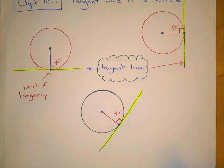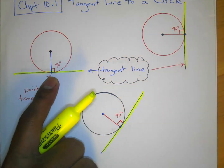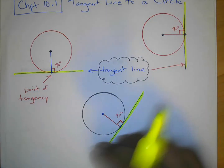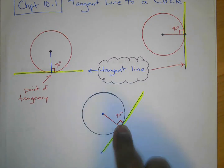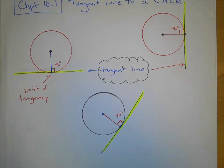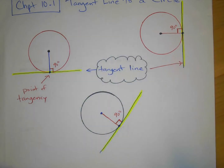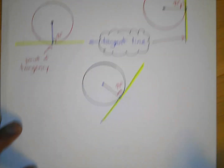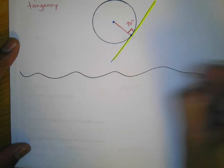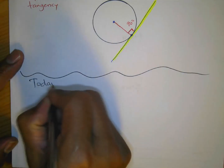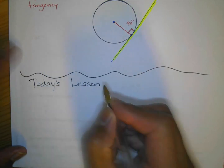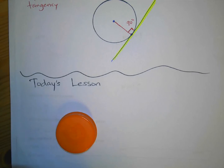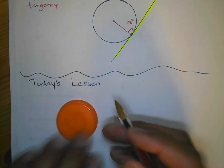We'll come back to the 90-degree property for tomorrow's lesson. But here's another thing that's also true about tangent lines that you're going to see in today's lesson. In today's lesson you're going to have this scenario: you're going to have a circle...